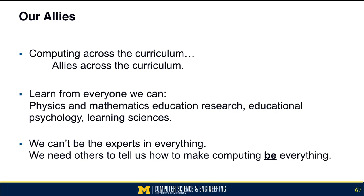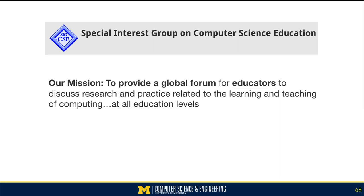We need to have computing across the curriculum, so we need allies across the curriculum. We need to learn from everyone we can. In my own work, I draw often from physics education research, mathematics education research, and a lot from educational psychology and learning sciences. Computer scientists can't be the experts in everything. We need others to inform us about how to make computing be everything — if it's going to be the master simulator, playing the imitation game, we need our allies to tell us what that's going to look like.